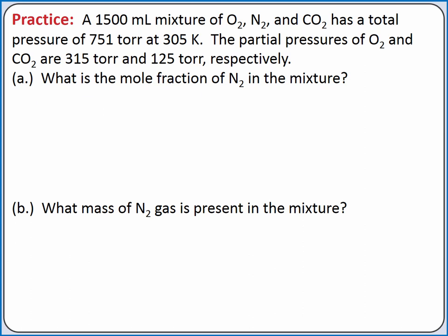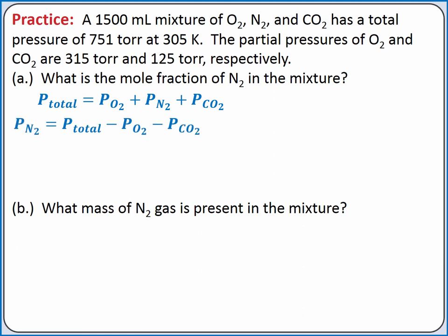We'll start with Dalton's law of partial pressures. The total pressure is equal to the partial pressure of oxygen plus the partial pressure of nitrogen plus the partial pressure of carbon dioxide. Rearranging the equation for the partial pressure of nitrogen and substituting in our values from the problem, we get the partial pressure of nitrogen is 311 torr.